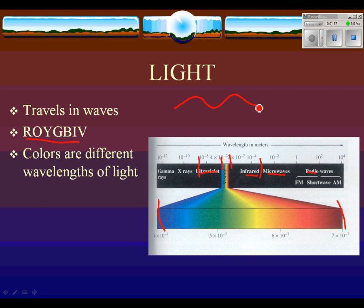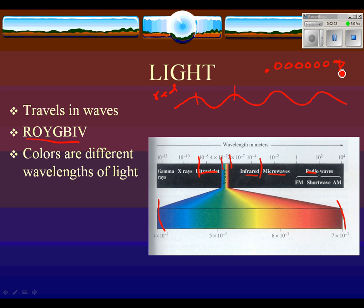If we quickly review waves, the length of a wave is the distance from top to top. A red wave is 7 times 10 to the negative 7th meters — that's 0.0000007 meters.